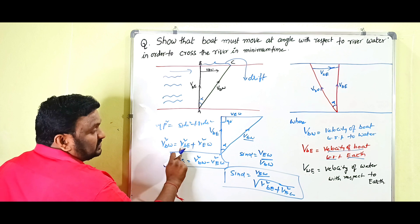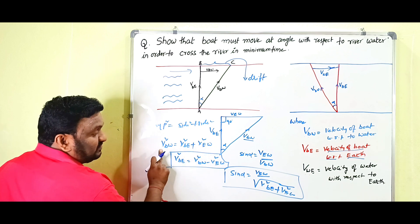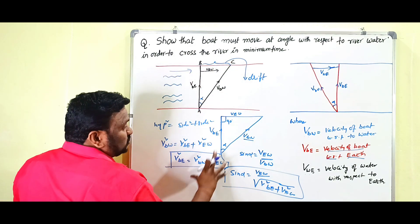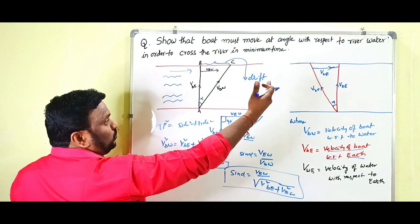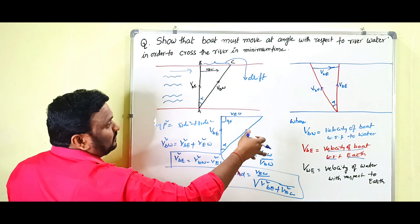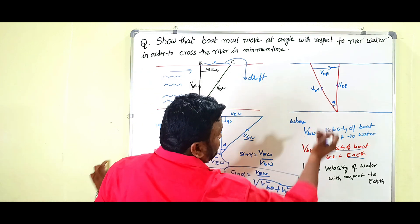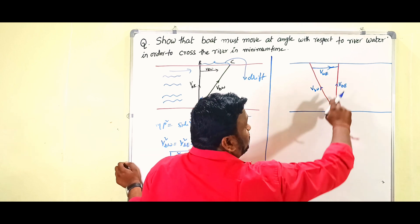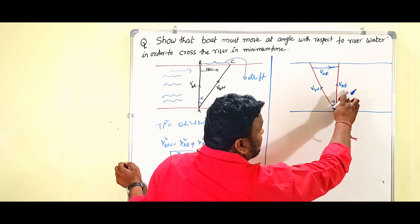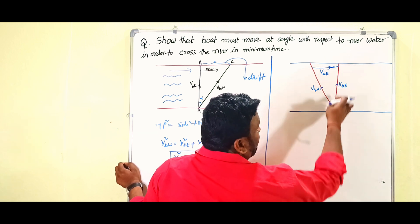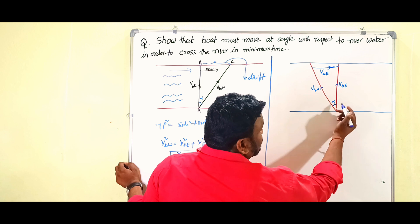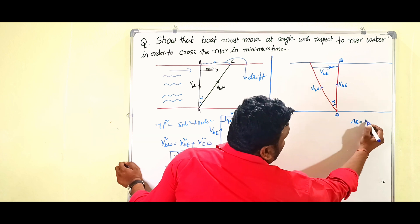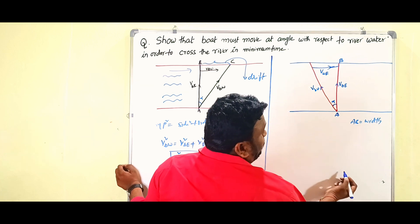So v_bw² = v_be² + v_ew². Now if we want the boat to go in the shortest time, it must follow this direct path. If the boat wants to reach the other bank within the shortest time, the resultant velocity v_be must be directed along the width of the river. Point A is the start and point B is directly across — that is the width of the river.